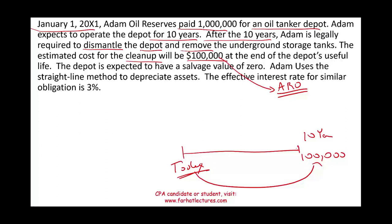Today we have to record an obligation that reflects our obligation 10 years from now. What we have to do is find the present value of this obligation. Also, the depot is expected to have a salvage value of zero. Adam uses straight-line depreciation. The effective interest rate for a similar obligation is 3%.